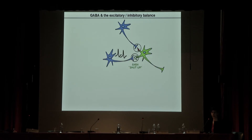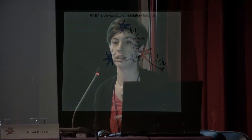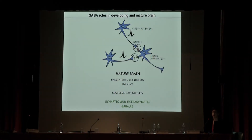If the GABAergic signal predominates, the neuron will, let's say, shut up, while if glutamate predominates, the neuron will generate action potentials and spread the message to other neurons. GABA is so important because it counteracts the action of glutamate, keeping the balance between excitation and inhibition, and also sets the level of neuronal excitability.